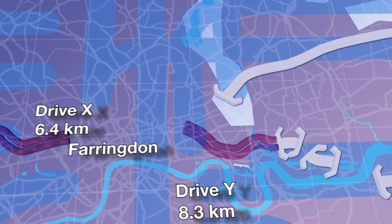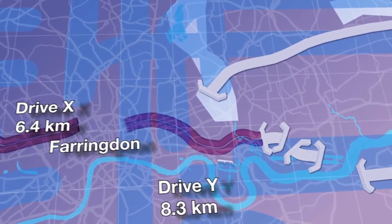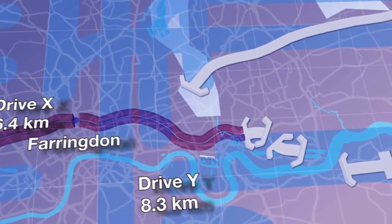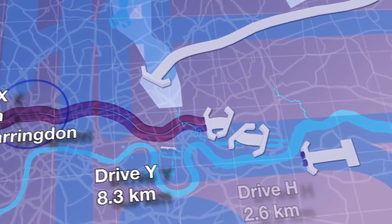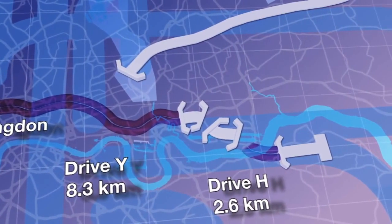A second pair of TBMs, Elizabeth and Victoria, will construct Drive Y, starting from Limo in Docklands and heading under central London to Farringdon.